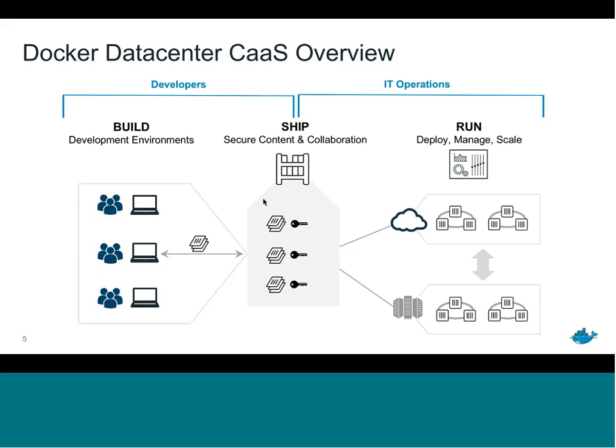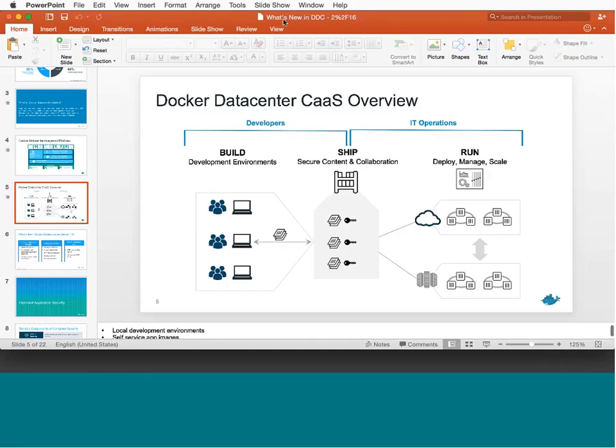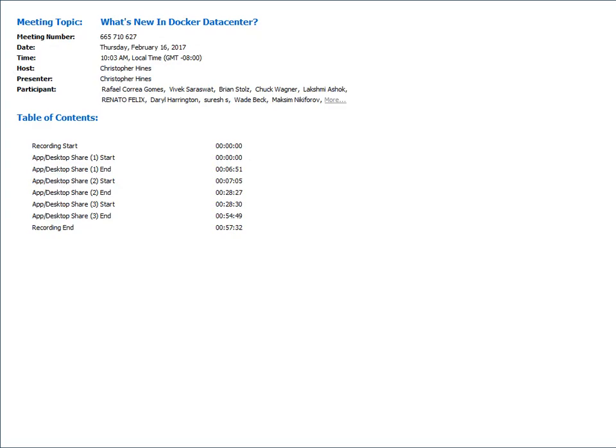Images are stored in a centralized location. When your IT ops team is ready to run them in production, they can pull and deploy those services across the cluster — in the cloud or on-prem — with full portability between environments, enabling hybrid use cases. Think of it as the ship point and handoff between developers and IT operations. I'll now pass it to Vivek to talk through the new features in Docker Data Center 1.13 and Docker Security Scanning.